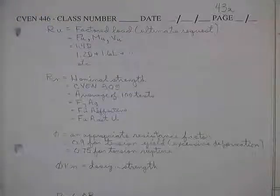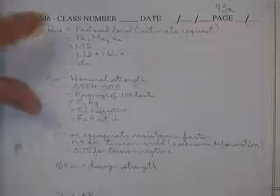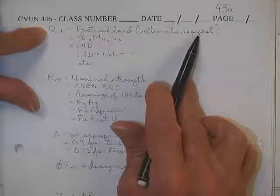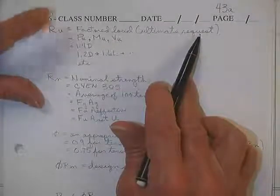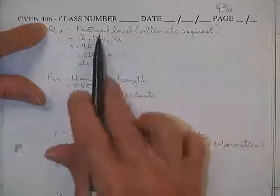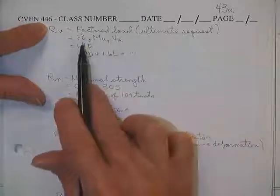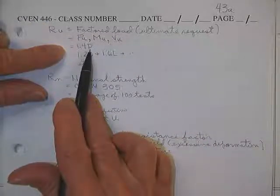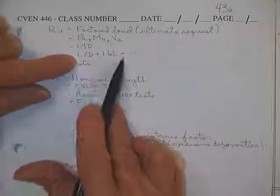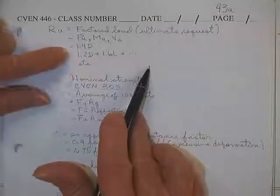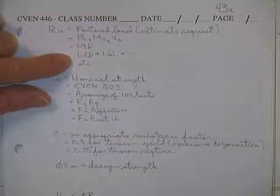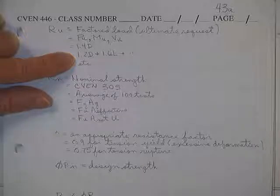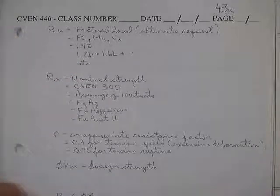Quick summary. What do all these symbols mean? R sub U is your ultimate request for load carrying capacity, be it M sub U, P sub U, you name it. It is a factored load. It's found by multiplying 1.4 times dead or 1.2 dead, 1.6 live or other things. The two most common is either this one or this one.